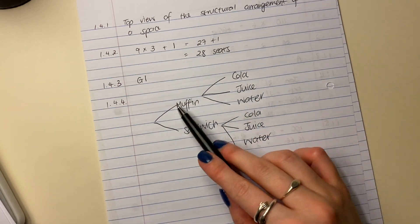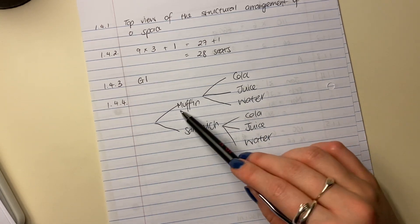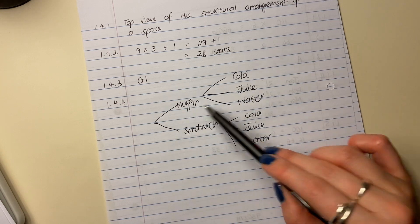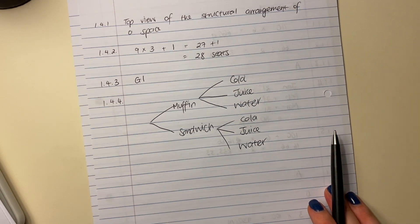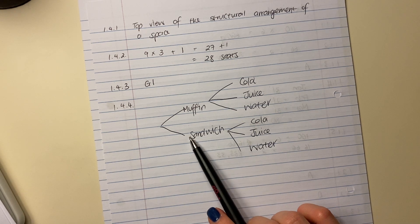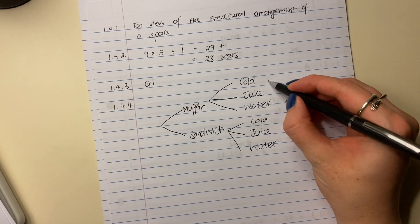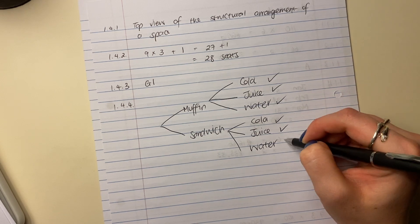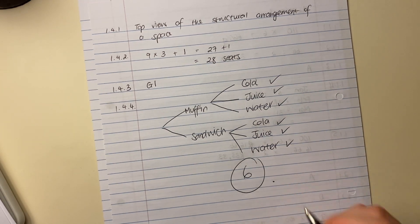So how many options do they have? One, two, three. A muffin and a cola, a muffin and a juice, a muffin and a water. Or they can have a sandwich and a cola, a juice, a sandwich and a juice and a sandwich and water. So one, two, three, four, five, six.